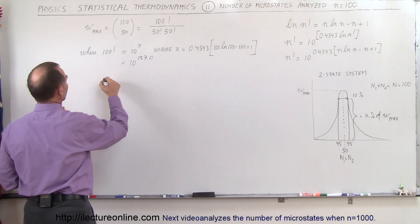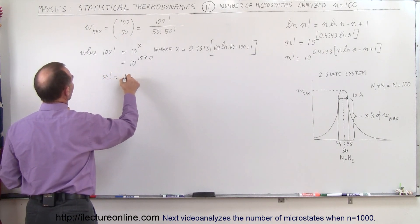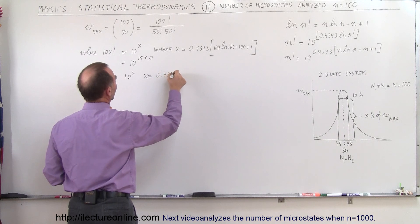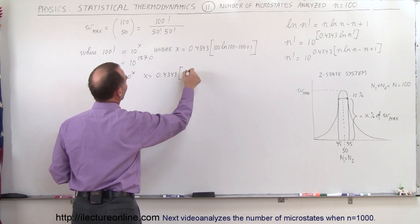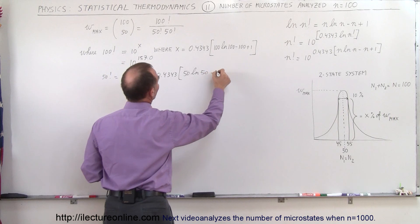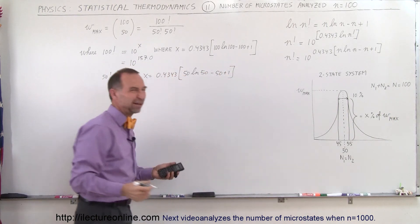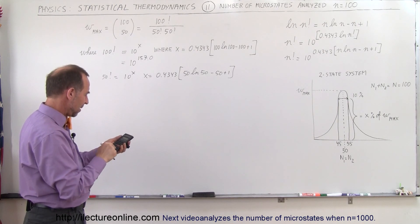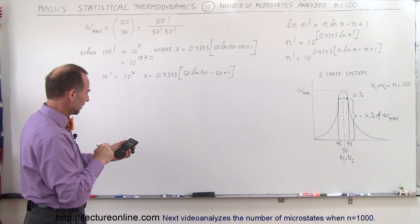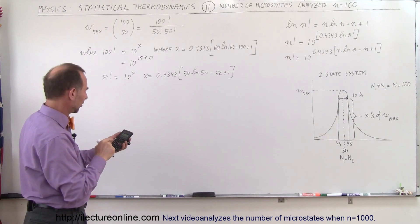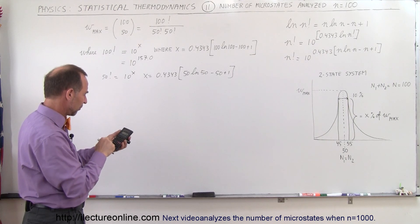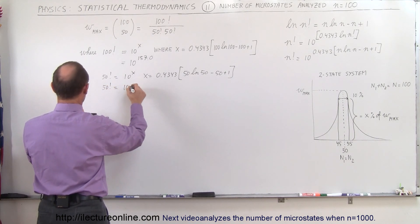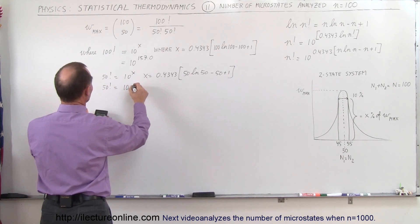For 50 factorial, it equals 10 to the x, where x equals 0.4343 times 50 times the natural log of 50, minus 50 plus 1 (same as minus 49). Taking the natural log of 50, multiplying by 50, subtracting 49, gives 146.6, then multiplying by 0.4343 gives 50 factorial equal to 10 raised to the 63.67 power.